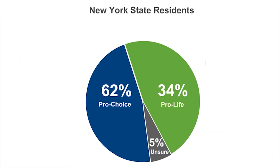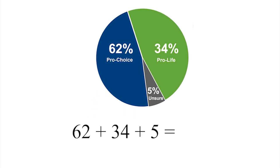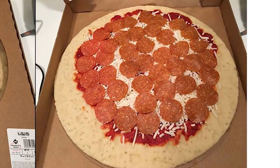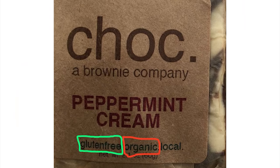New York state residents: 62% is pro-choice, 34% is pro-life, and 5% are unsure. Let me get out a calculator — 62 plus 34 — wait a minute. 16-inch traditional pizza — hey, you forgot a spot.